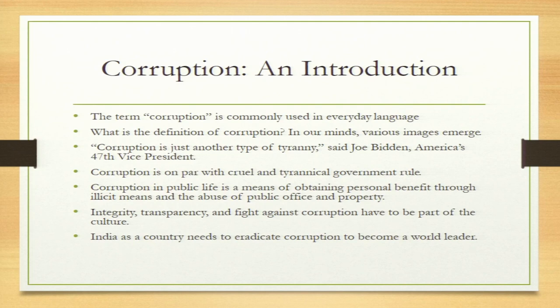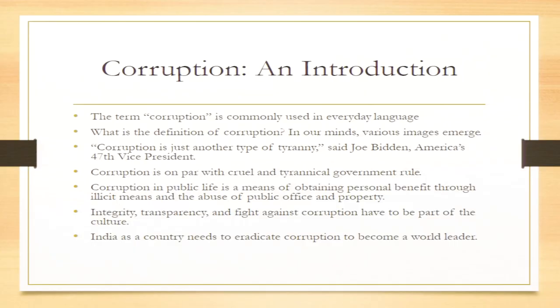Corruption is a word used in everyday language. How do we define corruption? The moment we hear about corruption — be it political corruption or corruption in administration — different notions come to mind. It was Joe Biden, the 47th Vice President of America, who said that corruption is just another type of tyranny. He compares it with tyranny — a tyrannical government rule.